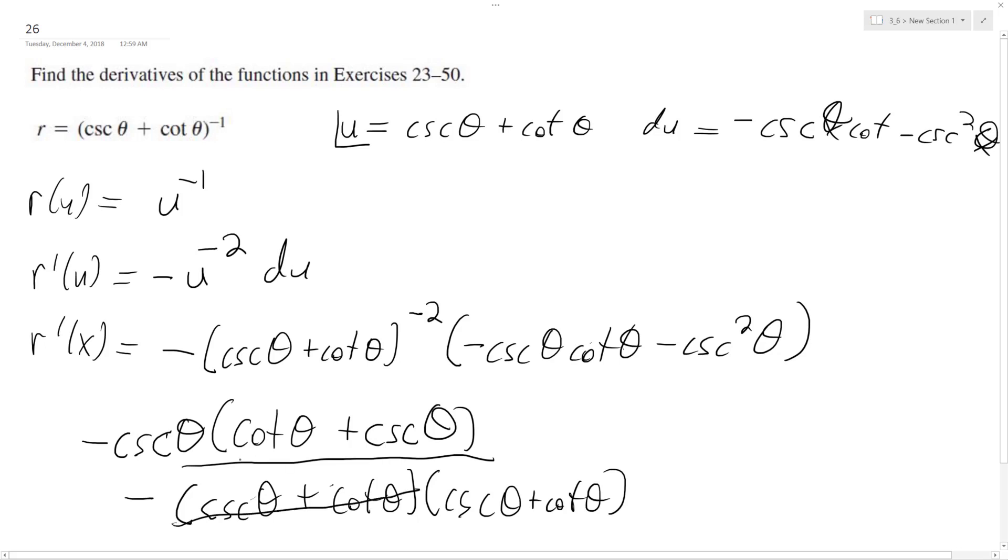And this is over negative quantity cosecant theta plus cotangent theta, because it was squared. So one of these cancels out, and the negatives cancel out, and that's how we're left with just cosecant theta over cosecant theta plus cotangent theta.